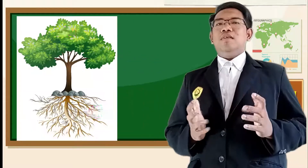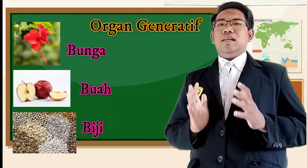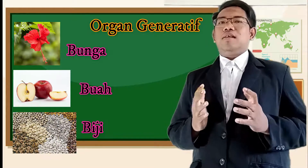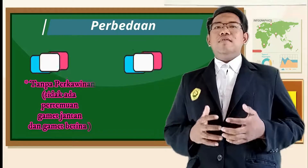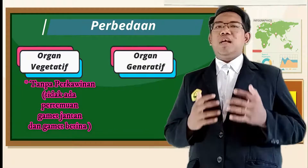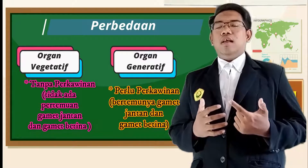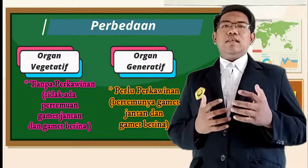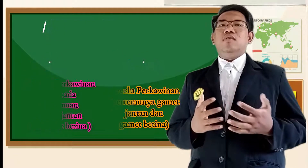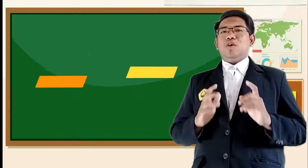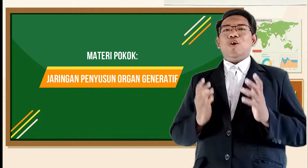Perbedaannya sudah terlihat. Organ vegetatif ada tiga macam: batang, akar, dan daun. Sedangkan organ generatif juga ada tiga: bunga, buah, dan biji. Perbedaan antara organ vegetatif dan generatif adalah organ vegetatif tidak memerlukan perkawinan atau pertemuan antara sel gamet jantan dengan sel gamet betina. Sedangkan organ generatif memerlukan pertemuan antara sel gamet jantan dengan sel gamet betina untuk menghasilkan individu baru.